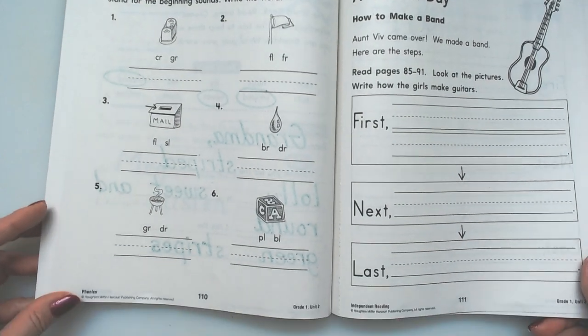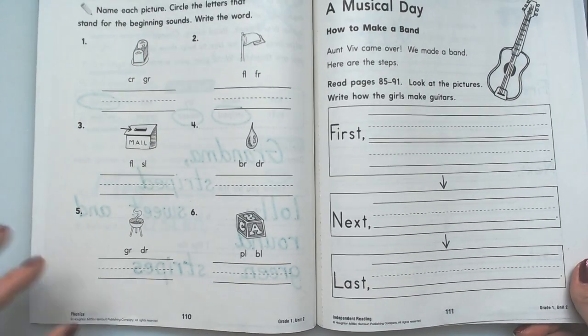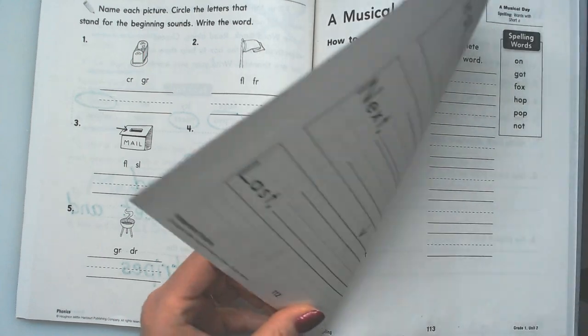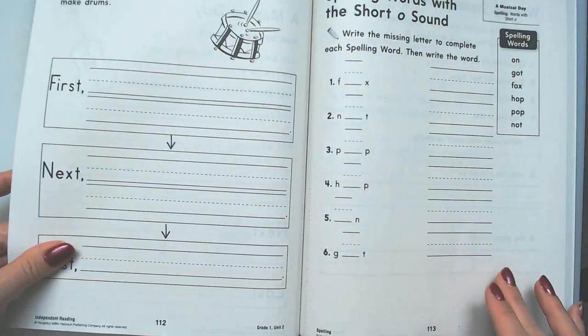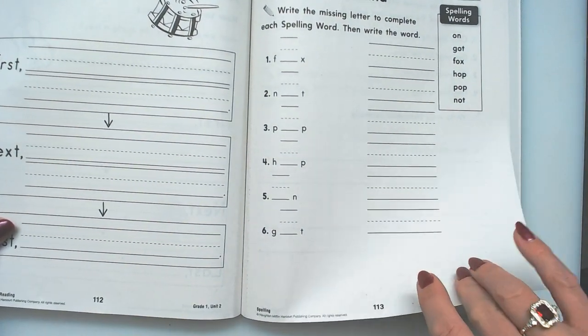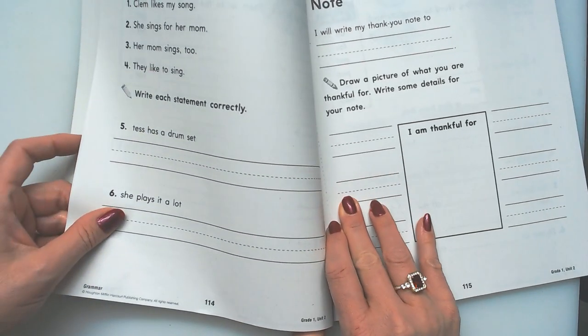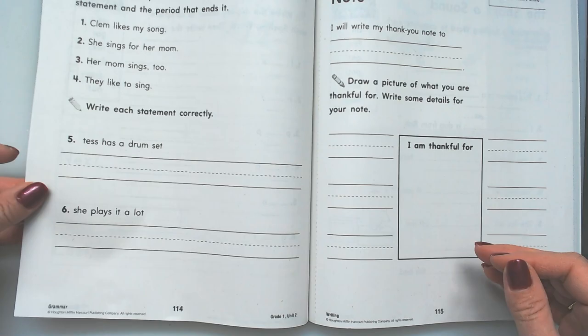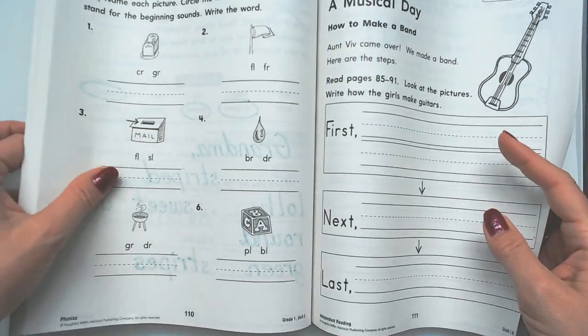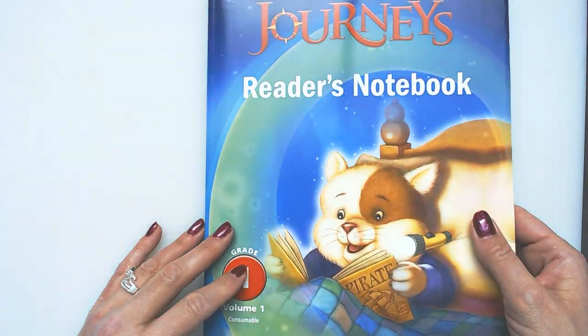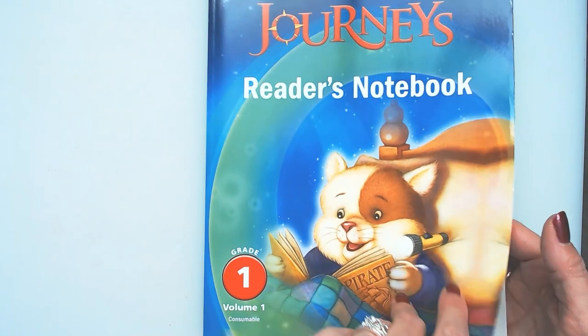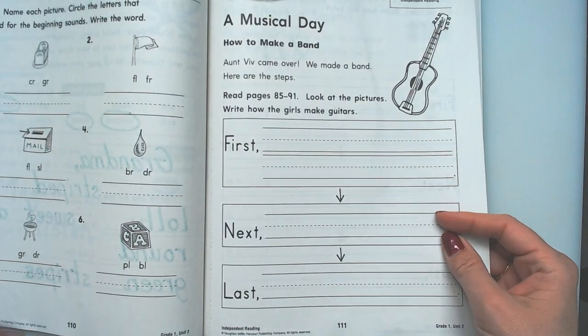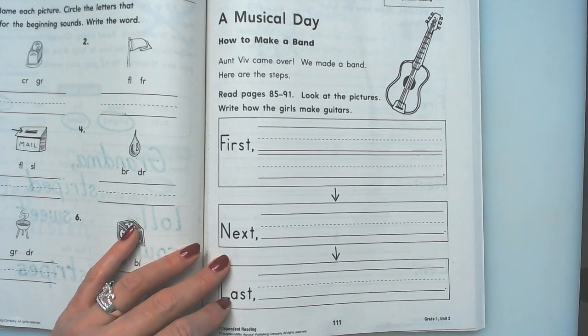Hi boys and girls, we're going to be working on three pages: 110, we're skipping this part, and 113 and 114. This is in our Reader's Notebook grade one. All right, so let's go ahead and get our blends taken care of.